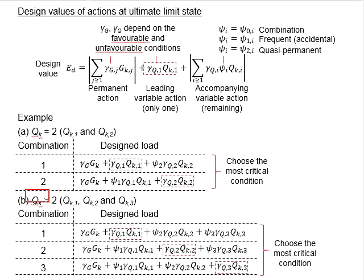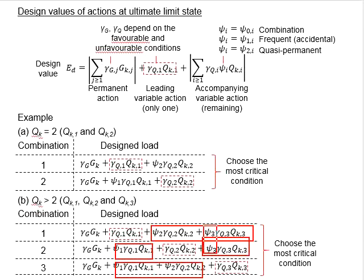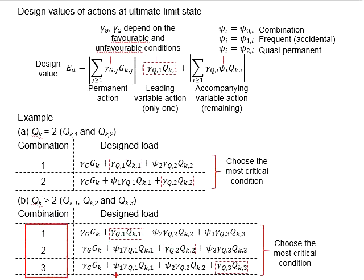Among the two combinations, choose the more critical situation for the analysis. In the case of more than two variable actions — for example Qk,1, Qk,2, and Qk,3 — you must test each as the leading variable action individually, while the remaining are considered accompanying variable actions multiplied by the reduction factor ψ₀. Among these three combinations, choose the most critical condition.